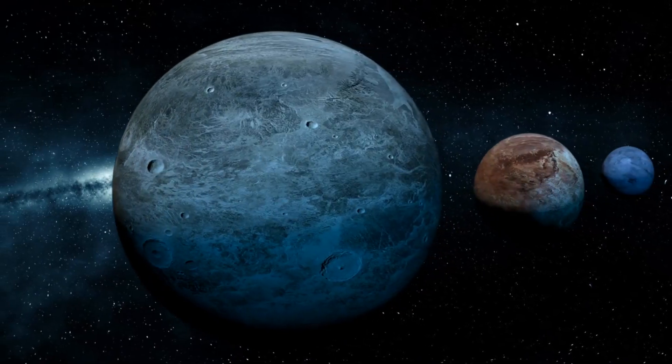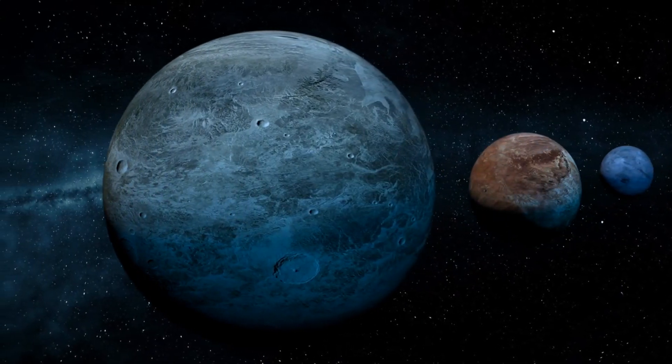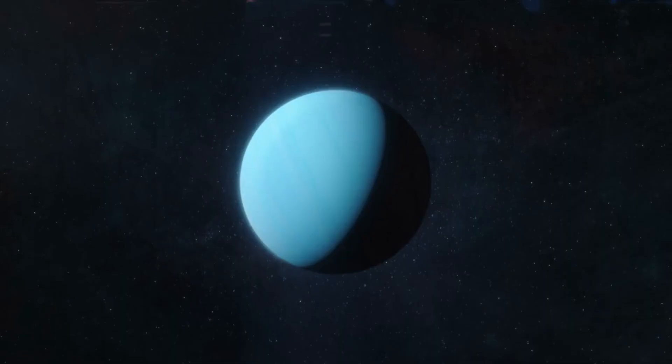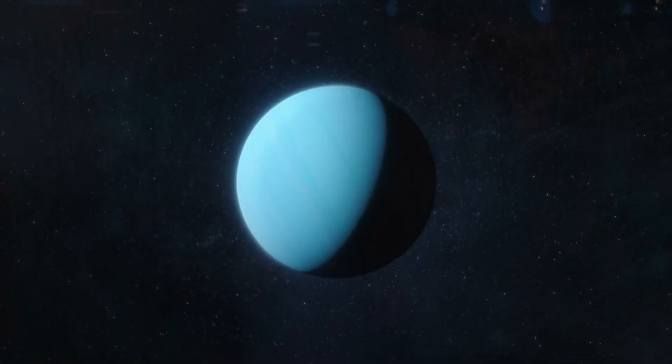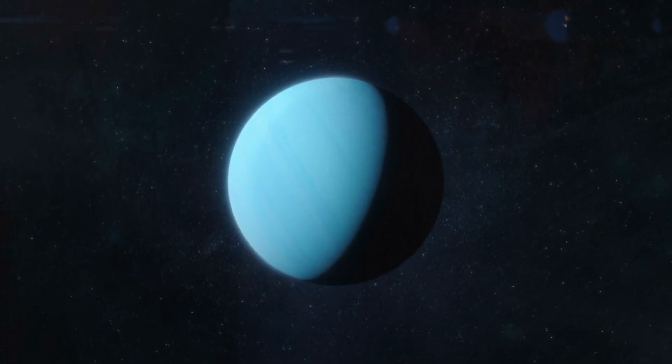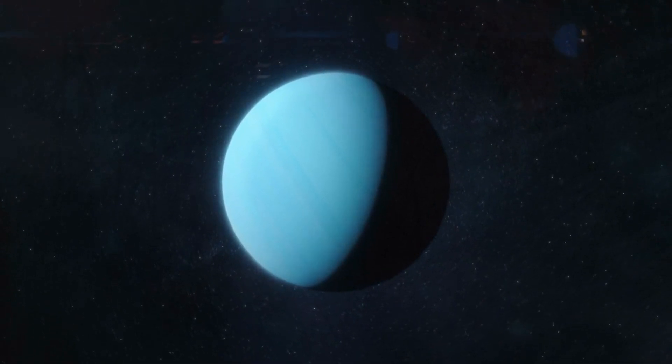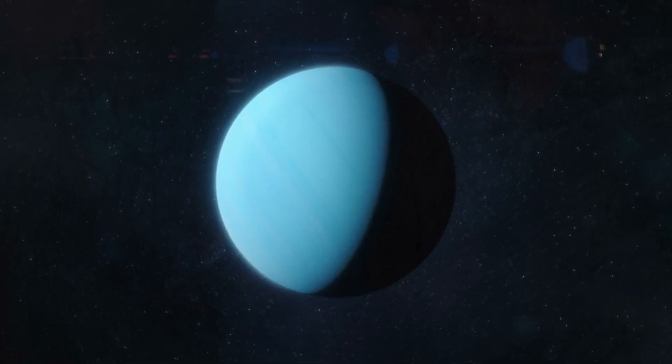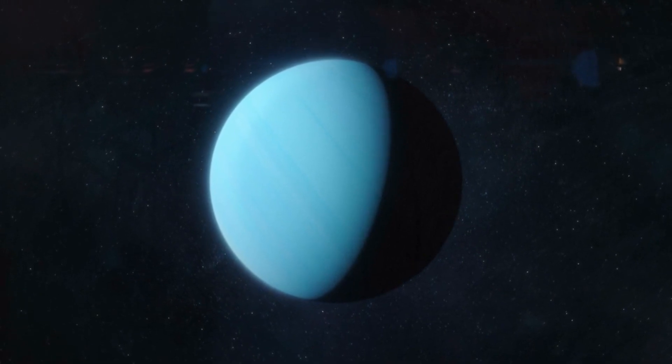If the planet was named after its Roman equivalent, it would have been called Caelus. Uranus is also the only planet in the solar system to rotate on its side, and like Venus, rotates on its axis clockwise, with all the other planets rotating counterclockwise. Here are some more fun facts about the solar system planets presented in order of their distance from the Sun.